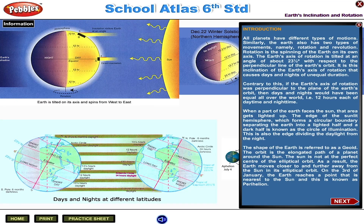Contrary to this, if the Earth's axis of rotation was perpendicular to the plane of the Earth's orbit, then days and nights would have been equal all over the world — that is, 12 hours each of daytime and night time.